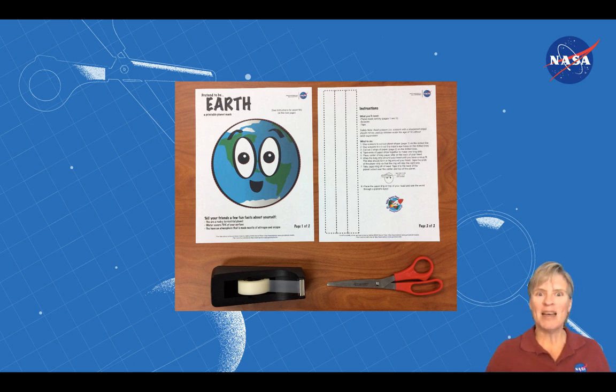Now let's make a mask. You can either print out a template for your planet or draw your planet on blank paper. If you draw the planet, make sure you draw it about the size of your head and mark a couple of places for eye holes.